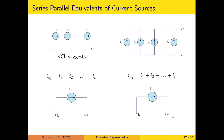For ideal current sources in series: since series elements carry the same current, this connection is only possible when I1 = I2 = ... = In are identical (KCL restriction). When they are identical, they are represented by a single equivalent source. For ideal current sources in parallel: there is no such restriction, and the equivalent current source is simply the sum of all individual current source values.